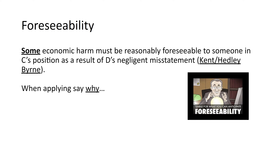The first thing to consider when looking at a scenario about negligent misstatement is foreseeability. Some economic harm must be reasonably foreseeable to someone in the claimant's position as a result of the defendant's negligent misstatement. When applying it, you need to say why you think that is the case. The authority is Kent v Griffiths in the normal way, or Hedley Byrne v Heller can be used here.